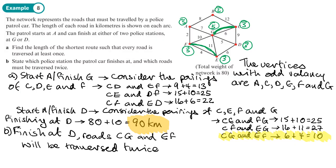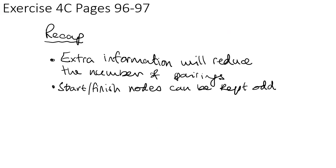So maybe those are the places we want to live because we'd see the police twice as often! We should now be able to do exercise 4C on pages 96 to 97, then the mixed exercise. Just to recap: where we have more than four odd nodes, extra information will reduce the number of pairings, and typically it will be where you start and finish - and those nodes can be kept as odd.